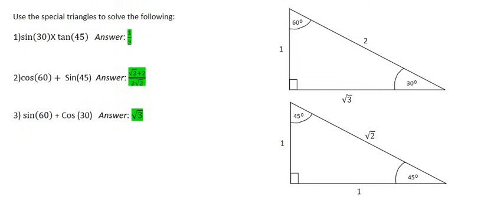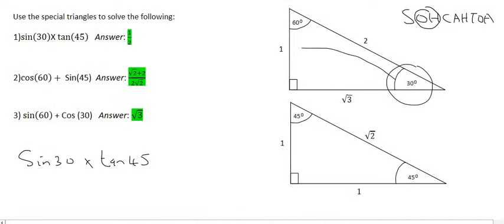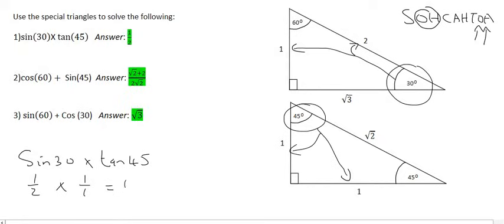Ready to try some more? In number one, the question says sin of 30 times tan of 45 — without a calculator. The sin of 30: 30 is over here, and using SOHCAHTOA, sin is opposite over hypotenuse. The opposite of 30 is one and the hypotenuse is two, so sin 30 is a half. Tan 45 using this triangle: tan is opposite over adjacent, that's one over one, which is just one. So half times one is a half.